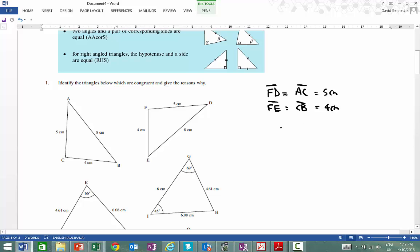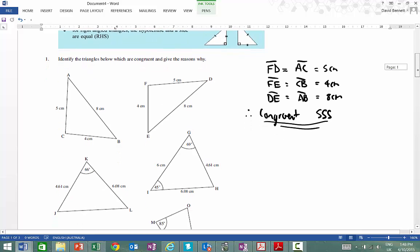and then we have DE, which is equal to AB, which is equal to 8cm, therefore congruent. And we'd say that one is side, side, side. So you actually have to state it, but then you have to state why it's going to be congruent.